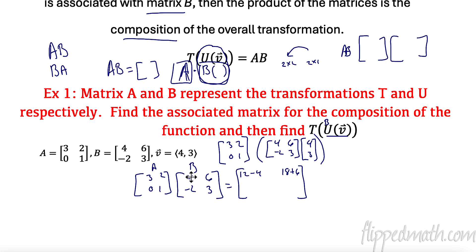Down here, second row, 0 times 4 is 0. 1 times negative 2 is negative 2. 0 times 6 is 0. 1 times 3 is 3. So my associated matrix, the matrix that I'm going to say, this actually takes both of my transformations into context, and I can multiply this and get my end result would be 8, 24, negative 2, 3. So that is my associated matrix.